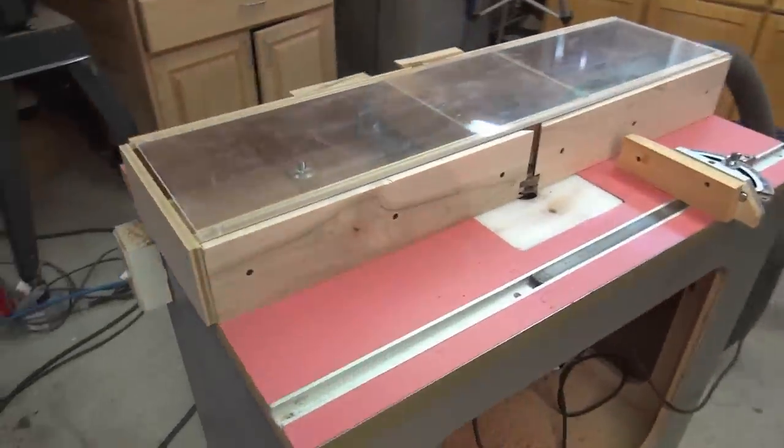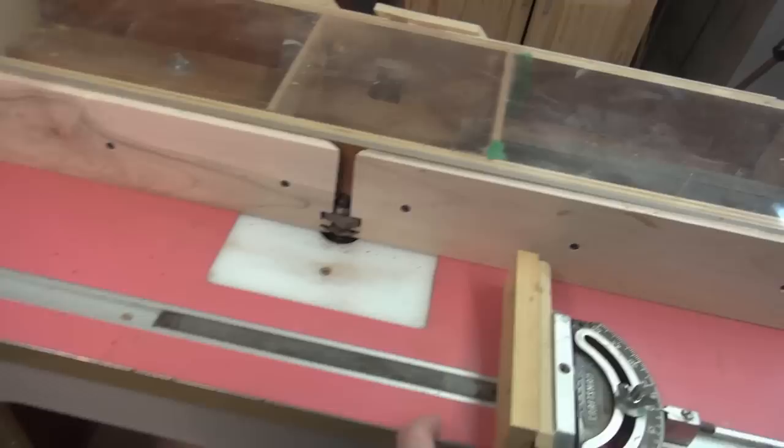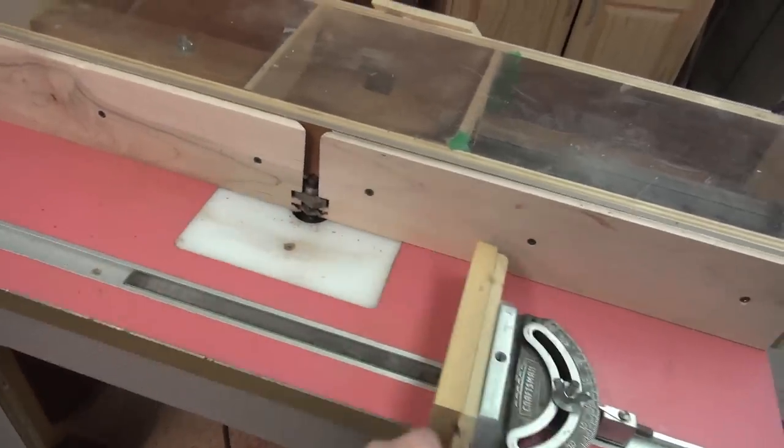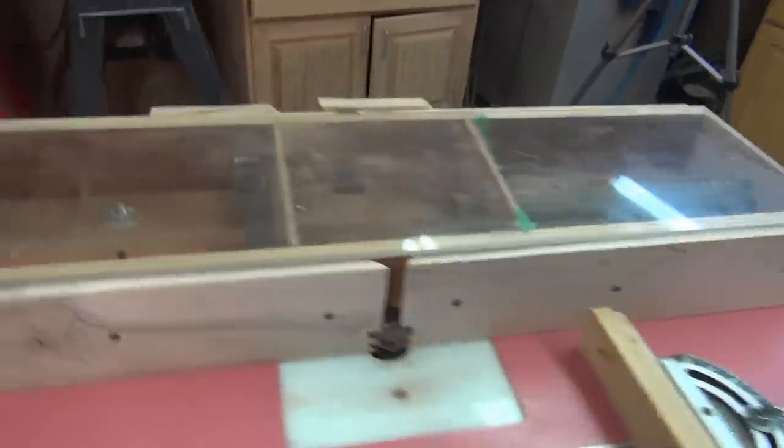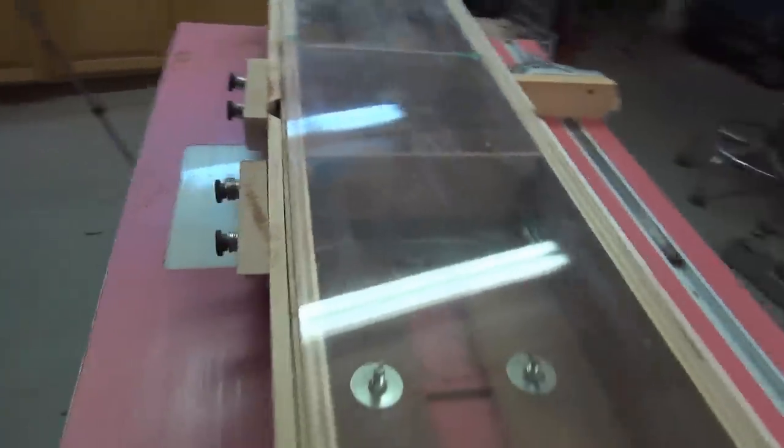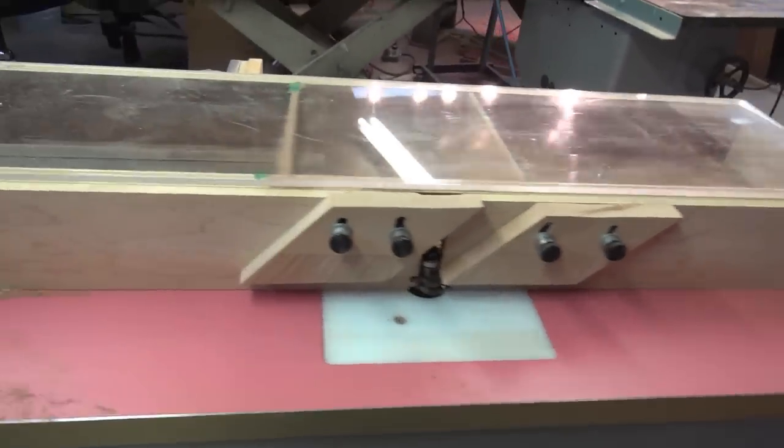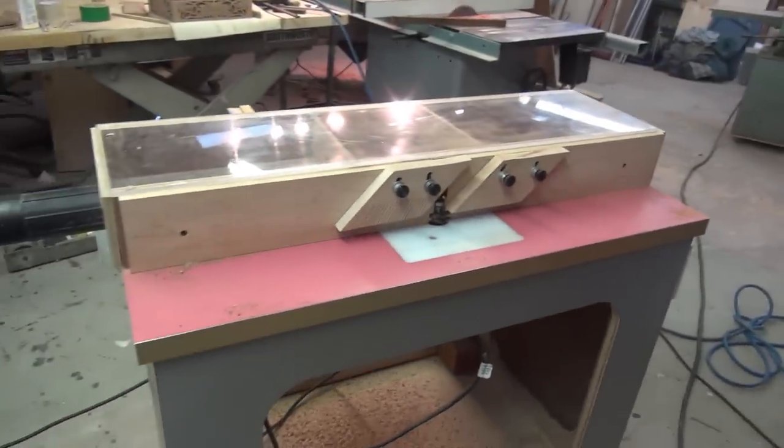Now to make the lid. I have a double router table that I made to make raised panel doors. I have a style cutter mounted on one side and the cope cutter mounted on the other side. I have a central dust pickup for both stations. I have decided to make mitered corners so I will only use the style cutter.